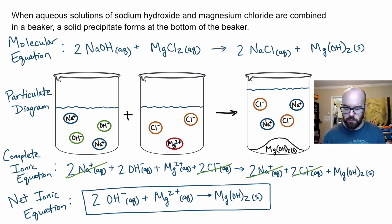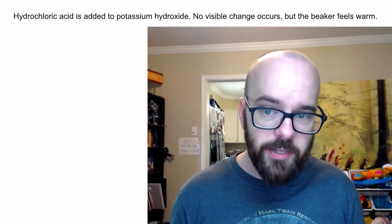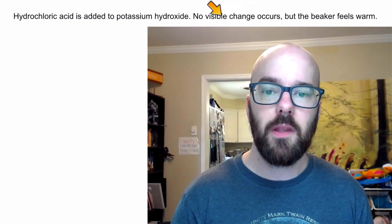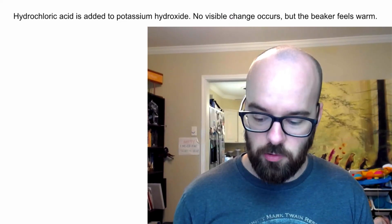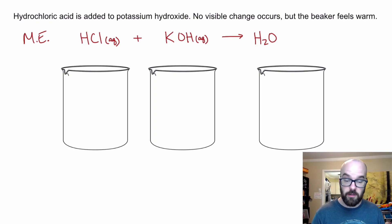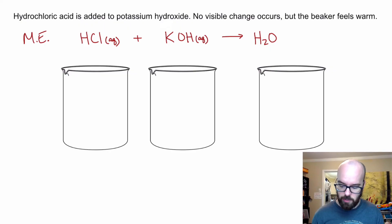Let's look at a couple more examples. In this next one, we have hydrochloric acid added to potassium hydroxide. No visible change occurs, but the beaker feels warm — and that temperature change tells us a reaction took place. This is an acid added to a base, which we call a neutralization reaction. The molecular equation is HCl(aq) + KOH(aq) → H₂O(l) + KCl(aq), a double displacement where hydrogen bonds with hydroxide to form water.